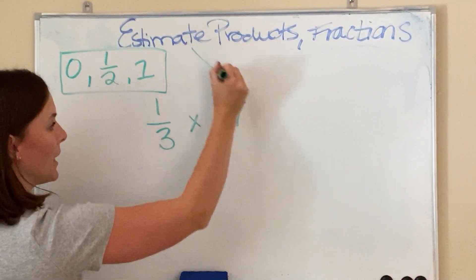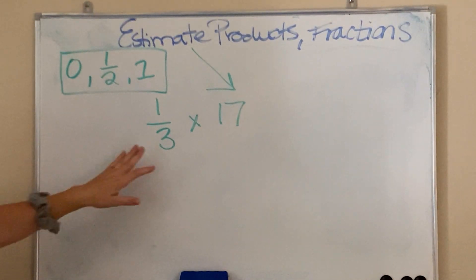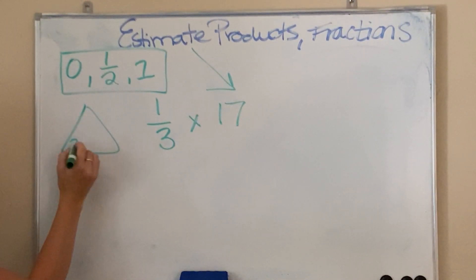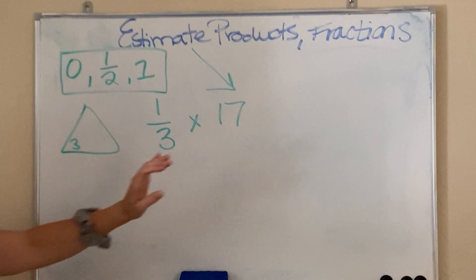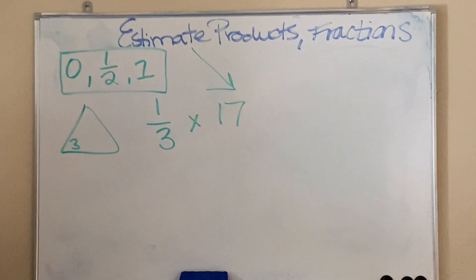What we're estimating is the whole number for now. And this is just this example. We're going to round the whole number to something that's compatible with 3. So, you need to think of your fact families.